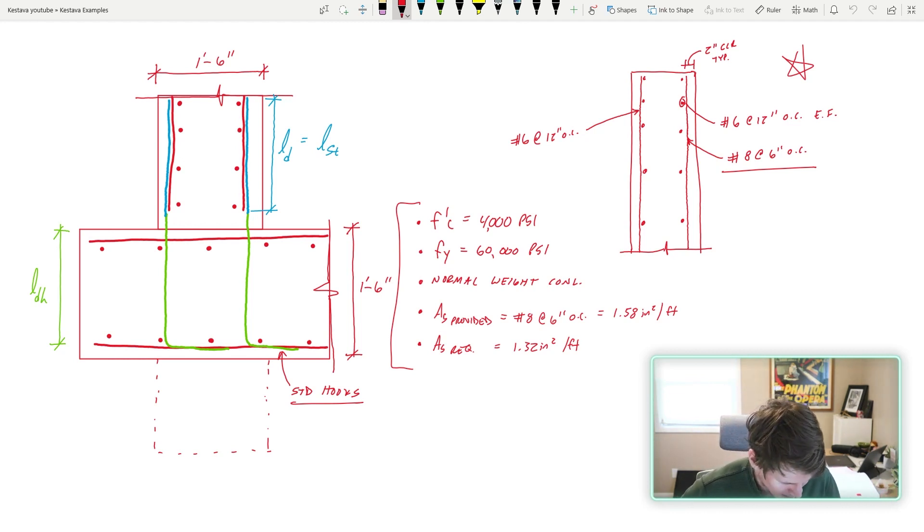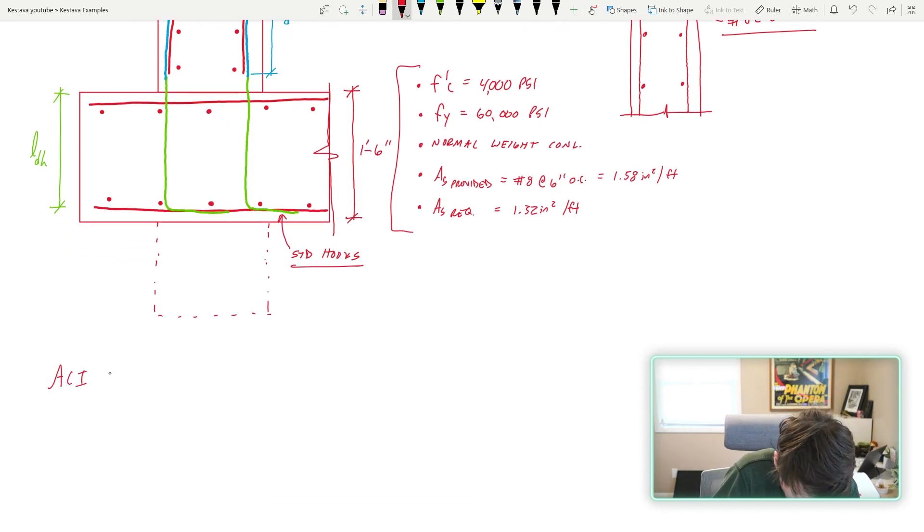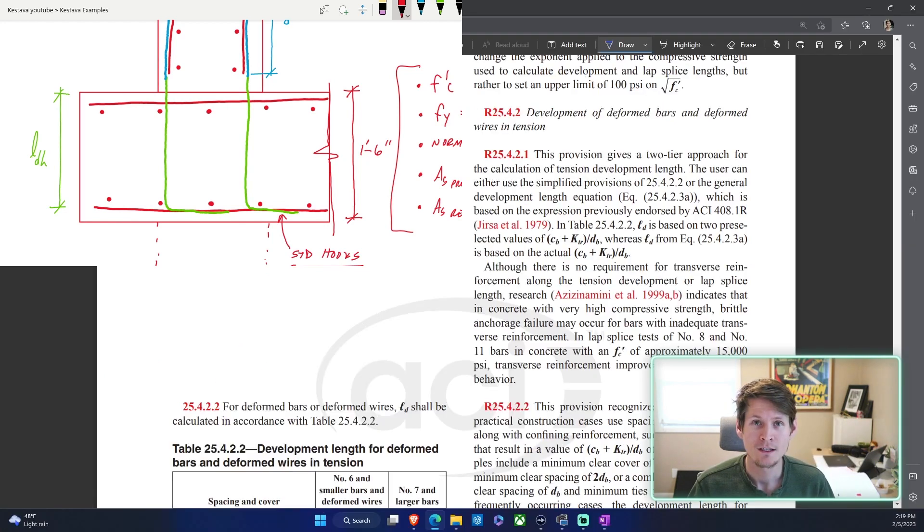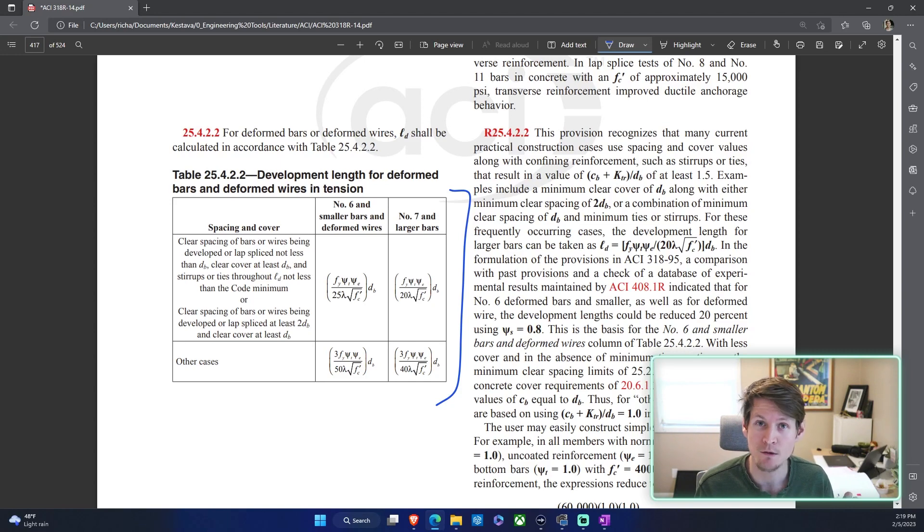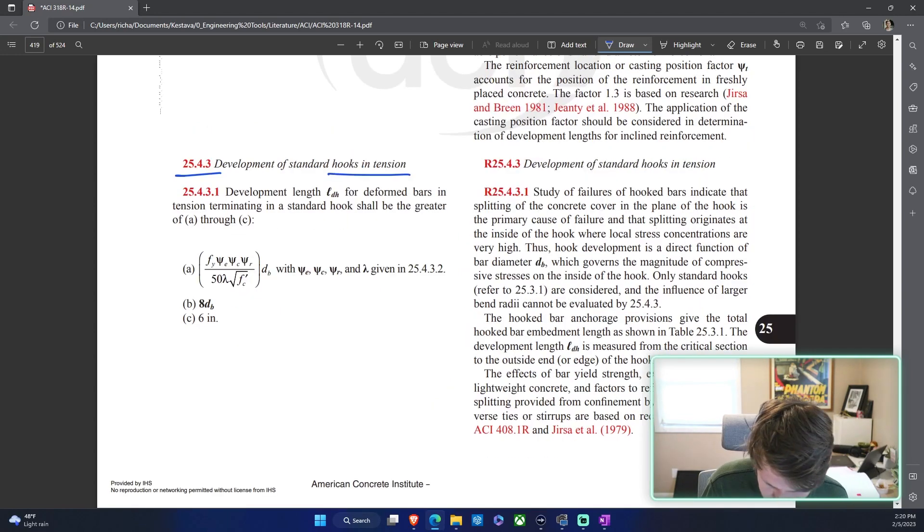We are going to head to ACI 25.4.3 to find Ldh. Something I want to point out quickly: the first thing you're going to pass is something that looks very similar to development of hooked bars, and that is the first section which is development of deformed bars and wires in tension. Tables and sections look very similar, so be careful with that. Let's head over to hooks in tension.